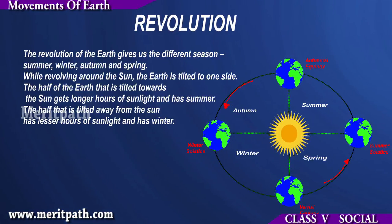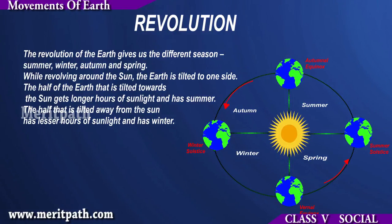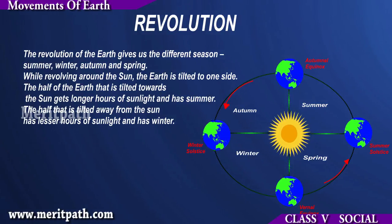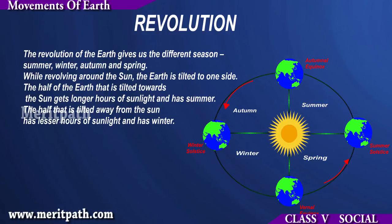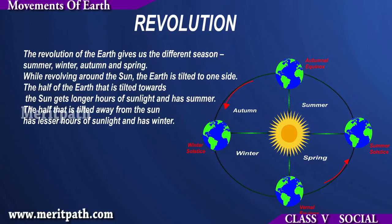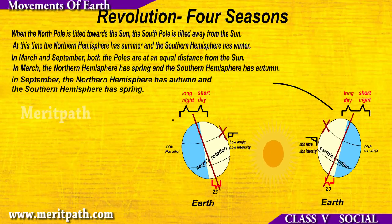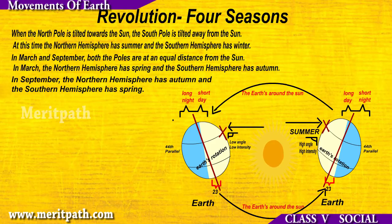Revolution: The revolution of the earth gives us the different seasons, such as summer, winter, autumn, and spring. While revolving around the Sun, the earth is tilted to one side. The half of the earth tilted towards the Sun gets longer hours of sunlight and has summer. The half tilted away from the Sun has lesser hours of sunlight and has winter. When the North Pole is tilted towards the Sun, the South Pole is tilted away. At this time the Northern Hemisphere has summer and the Southern Hemisphere has winter.